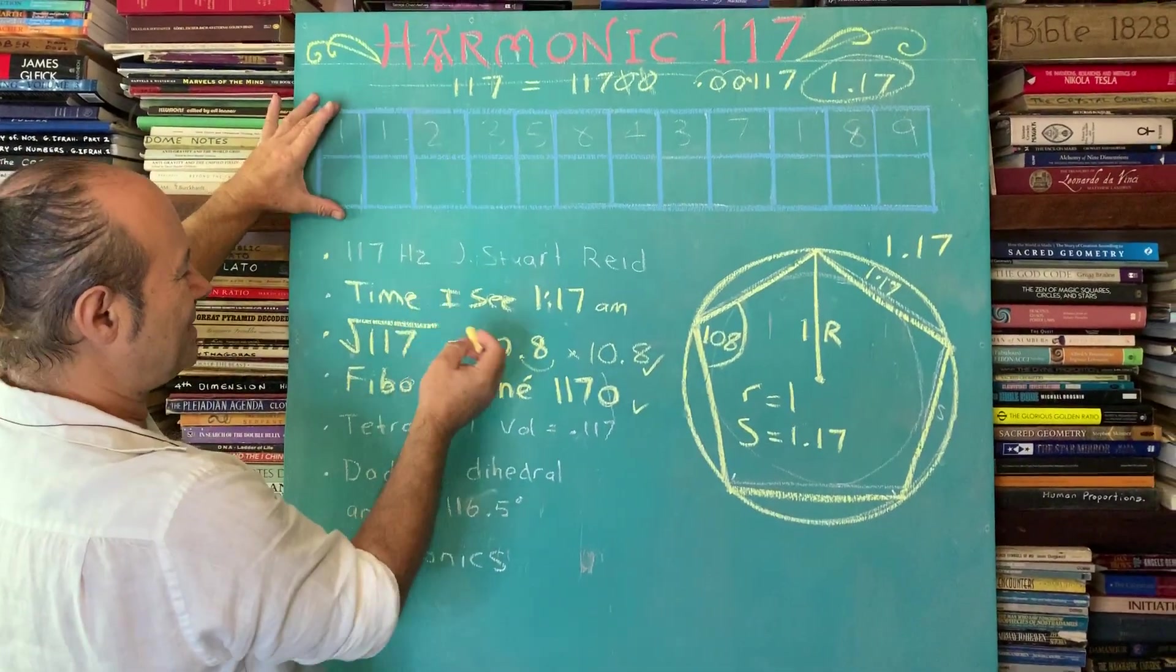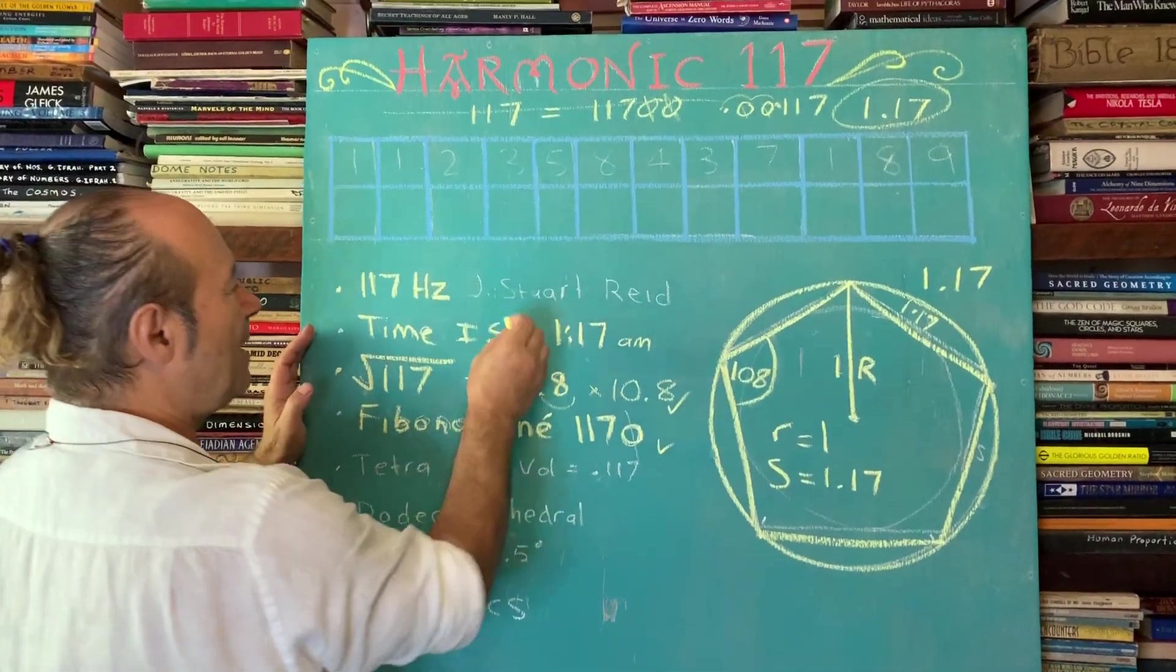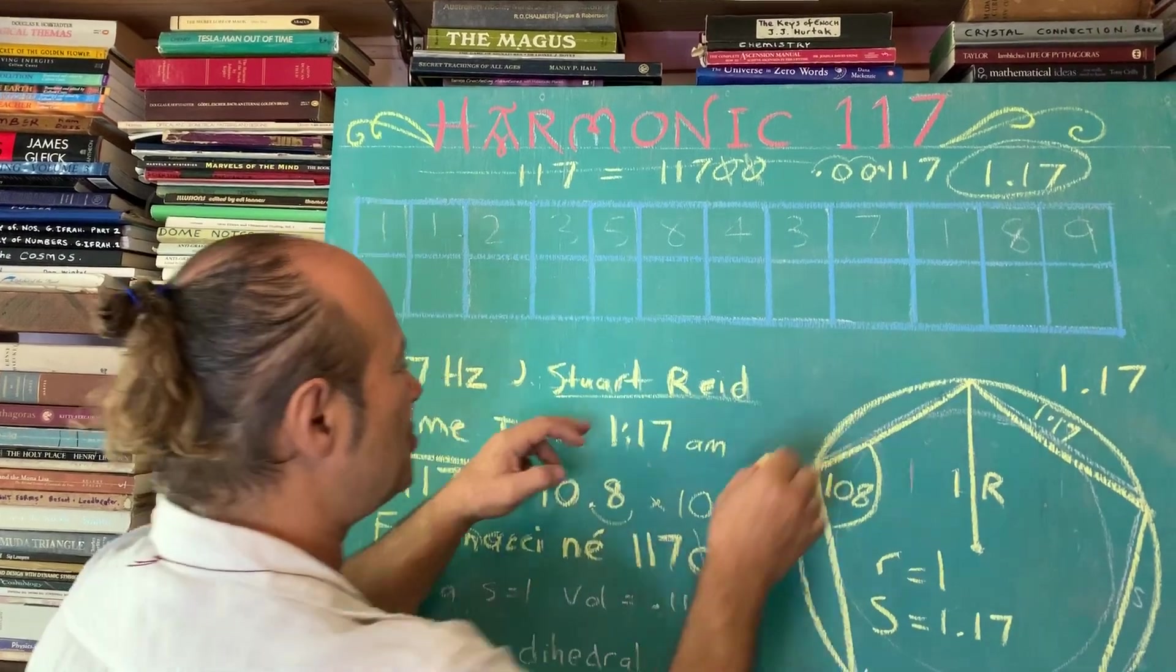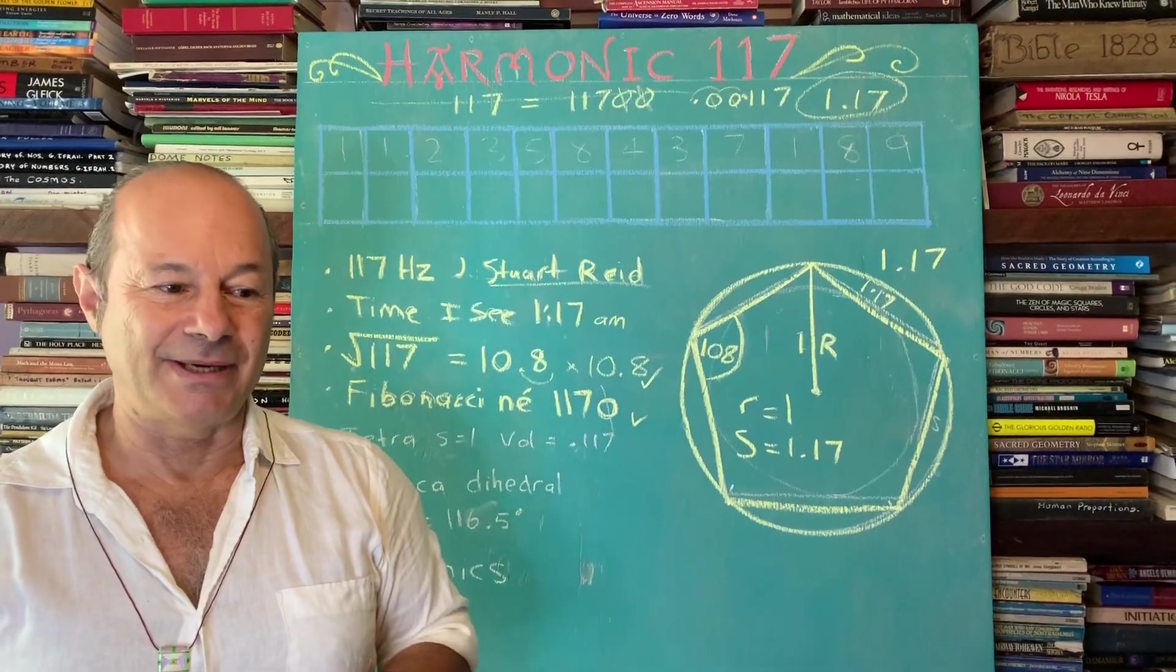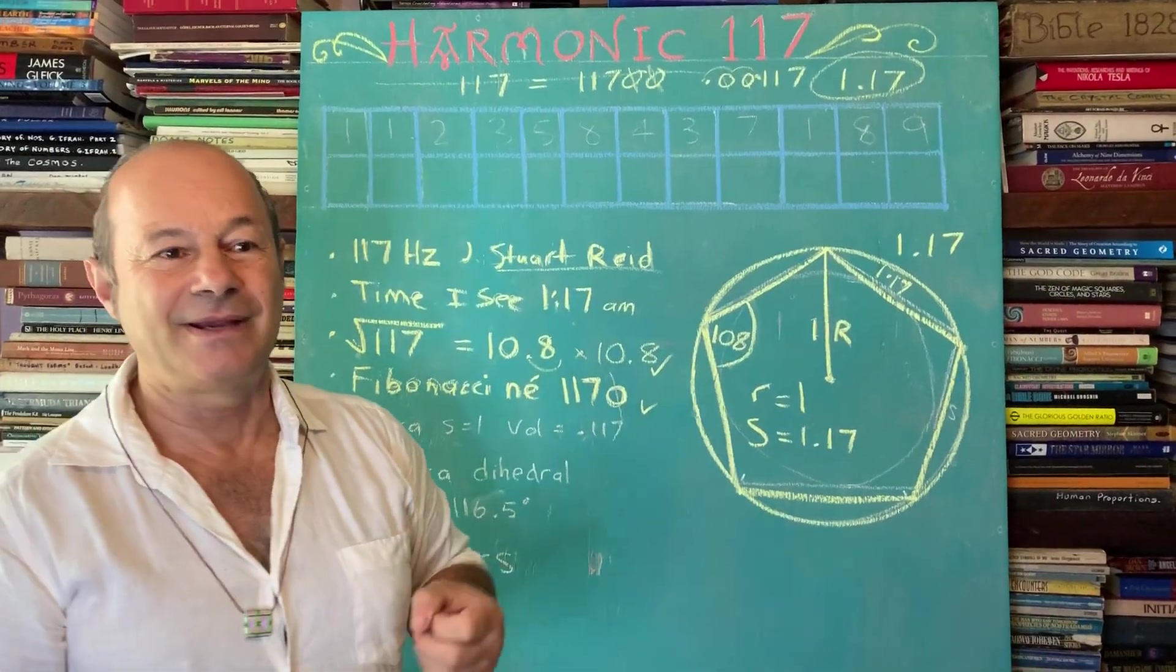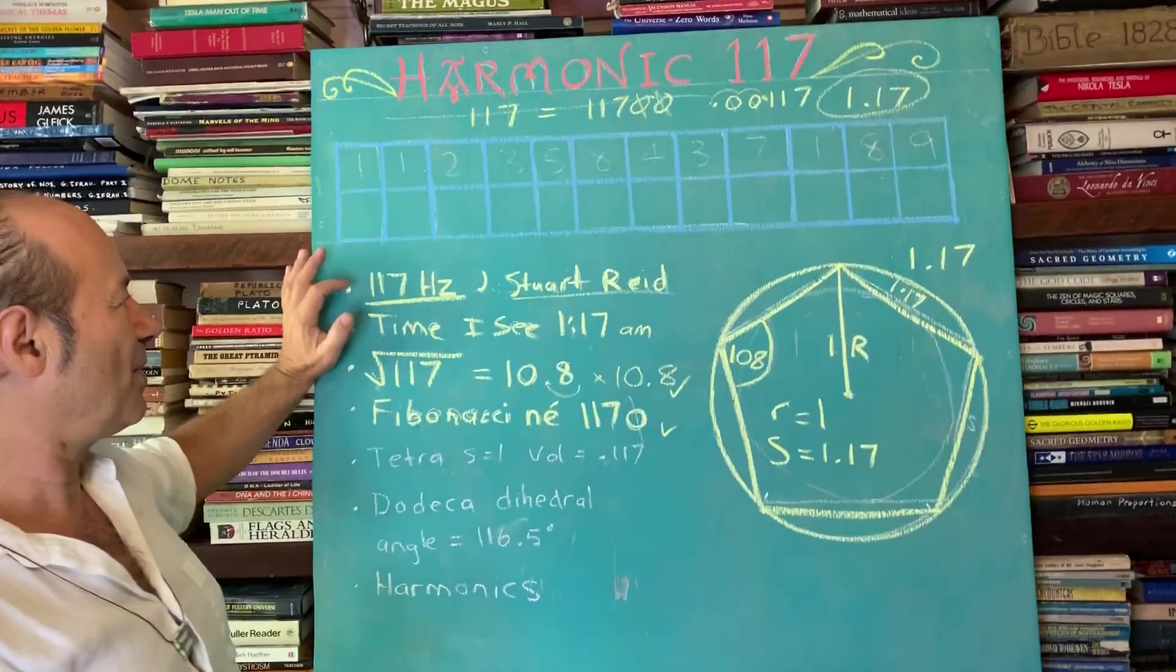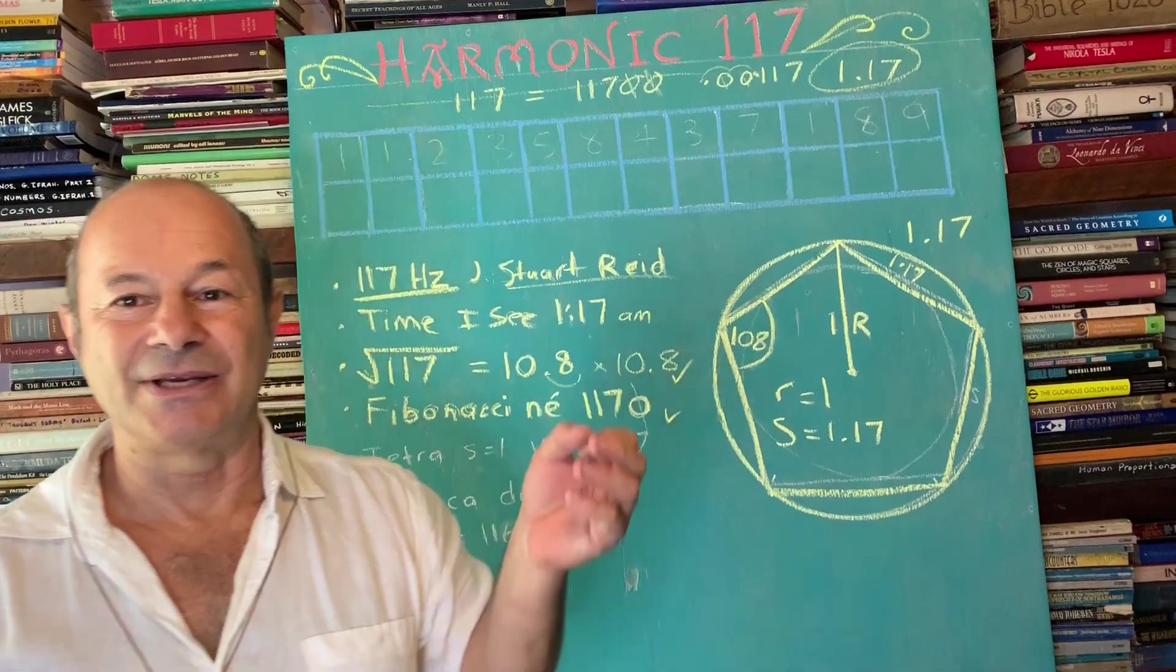We're going to get onto the Fibonacci sequence in a second. But the number in Hertz, in terms of cycles per second, a colleague of mine, John Stuart Reid, he's well known for inventing the cymascope. John Stuart Reid did some experiments with the King's Chamber, the coffin in the Giza Pyramid, the sarcophagus. When they measured the Hertz or the cycles per second, it resonated to 117 Hertz. If you want more, you can contact me for all the links on John Stuart Reid. This is about cymatics. Sound is showing us the form.